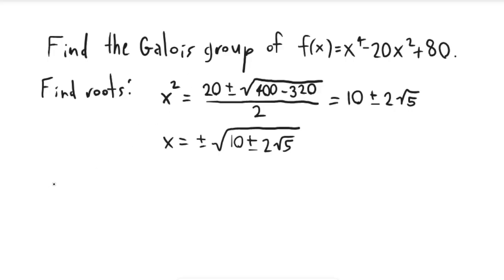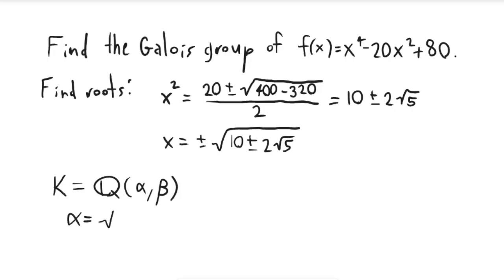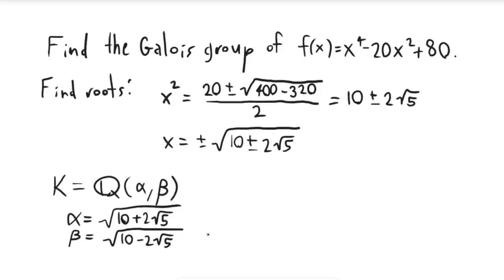Based on that, we can already find the splitting field of this polynomial, which we'll call K. We write this as Q adjoined alpha and beta, where alpha refers to the square root of 10 plus 2 square root of 5, and beta refers to the square root of 10 minus 2 square root of 5. As long as you adjoin these two numbers to Q, you automatically get their negatives, giving all roots of f(x).